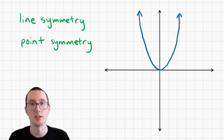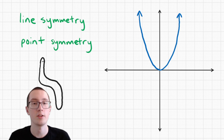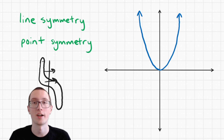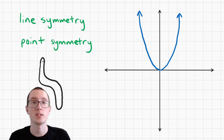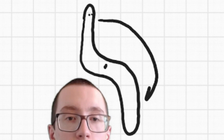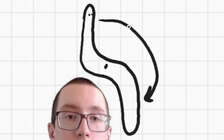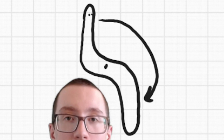Point symmetry is a little bit different. You can think of point symmetry as being like a snake. If you were to draw a line through it, this is not a mirror image of itself, so it does not have line symmetry. But it does have point symmetry, because if you put a dot right in the middle and rotate everything 180 degrees — basically just flip it upside down — it would look exactly the same.